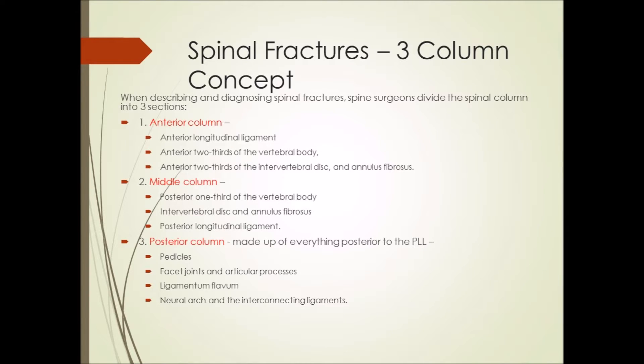When describing and diagnosing spinal fractures, spine surgeons use the Denis classification to divide the spinal column into three sections. The first is the anterior column, which is made up of the anterior longitudinal ligament, the anterior two-thirds of the vertebral body, and the anterior two-thirds of the intervertebral disc and annulus fibrosus.